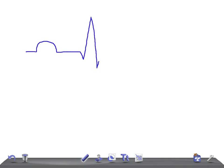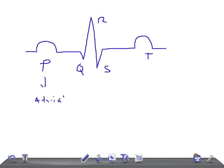Now let's start today's topic. The waveform consists of P, Q, R, S, and T. The P wave is due to atrial depolarization — remember, the P wave is caused by atrial depolarization.